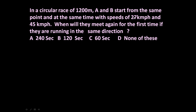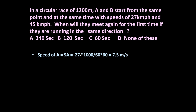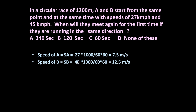To answer such questions, first let us convert these speeds into meter per second. Speed of A is SA = 27 km/h = 27 × 1000 / (60 × 60) = 7.5 meter per second. Similarly, speed of B is SB = 45 × 1000 / (60 × 60) = 12.5 meter per second.